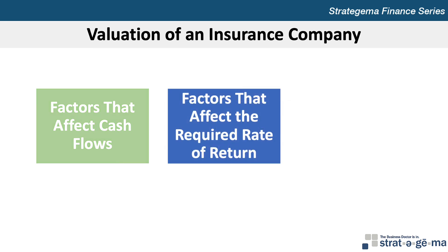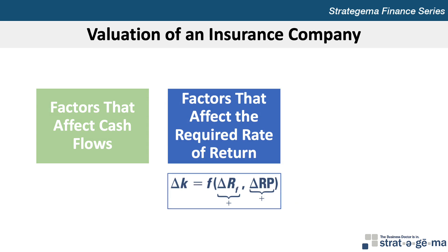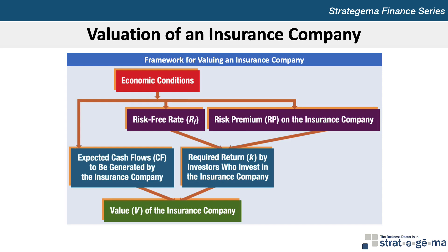As we've seen with other types of operations, the required rate of return by investors who invest in an insurance company is a function of changes in the risk-free interest rate and the risk premium. The risk-free interest rate is usually expected to be positively related to inflation, economic growth, and the budget deficit, but inversely related to money supply growth. The risk premium on an insurance company is inversely related to economic growth. It can also be affected by industry conditions such as regulations and management abilities. This exhibit provides a framework for valuing an insurance company. In general, the value of an insurance company is favorably affected by strong economic growth, a reduction in interest rates, and strong management capabilities.